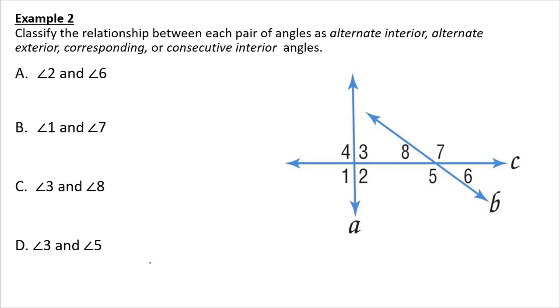Here we have angle two and angle six. What I sometimes have to do is I kind of have to carve out the angle. So angle two is there. Angle six is here. C is my transversal. Same side of the transversal, both above or to the right of our other two lines. So those would be corresponding.